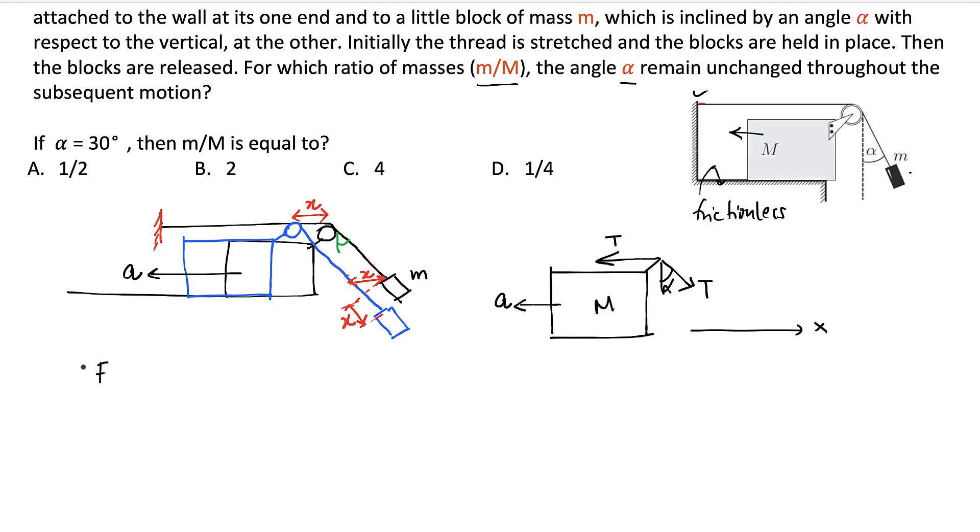And if we choose this direction as x direction, then we can write F equal to MA in the same direction. And that will give me T minus T sine alpha equal to MA. Which is, that means that A is equal to T(1 minus sine alpha) by M. So let's call this equation 1.